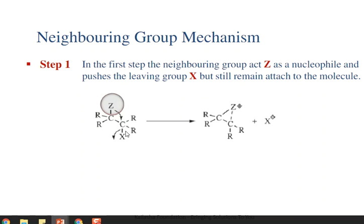Now let's see the steps of how neighboring group participation occurs. The carbon bearing substituent X is the reaction center, and Z is the neighboring group. In the first step, the neighboring group Z acts as a nucleophile — it donates or shares its lone pair of electrons, or pair of electrons from a sigma or pi bond, toward the reaction center.